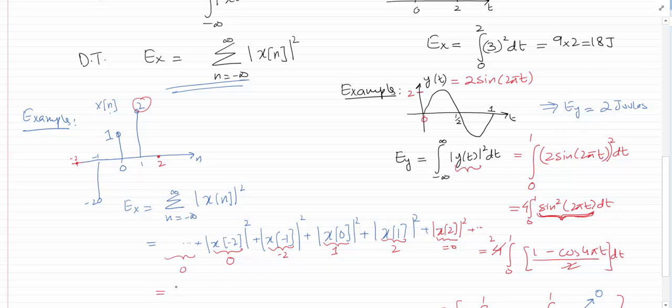Now if I take all these values here, I'll have |-2|² + |1|² + |2|², and that turns out to be 4 + 1 + 4, which is 9 joules. So the energy of this signal is 9 joules.